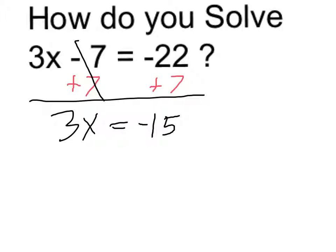So now I want to get rid of the multiplication by 3, so I'm going to divide both sides by 3. 3 divided by 3 is 1, and 1 times x is simply x, so I know that this must be equal to negative 15 divided by 3, which is negative 5.